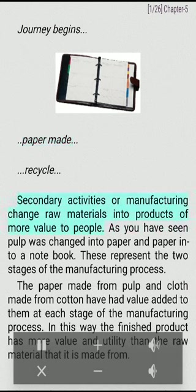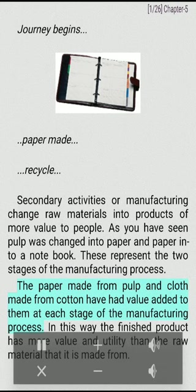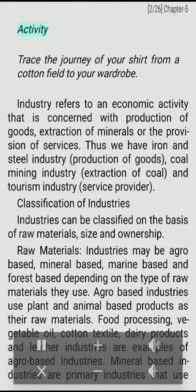Secondary activities involve manufacturing that changes raw materials into products of more value to people. As you have seen, pulp was changed into paper and paper into a notebook. These represent two stages of the process. The paper made from cotton has had value added at each stage of the manufacturing process. In this way, the finished product has more value and utility than the raw material it is made from.